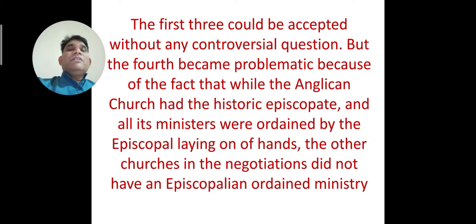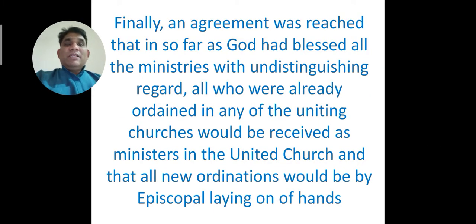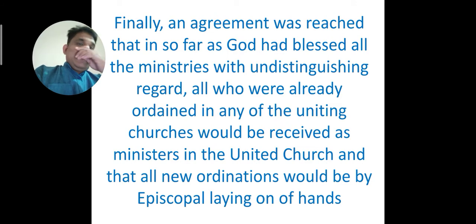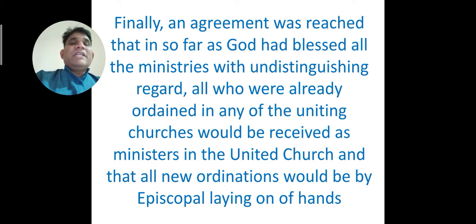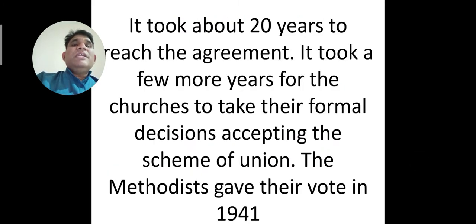The fourth principle became problematic because, while the Anglican Church had a historic episcopate and all its ministers were ordained by the episcopal laying on of hands, the other churches in the negotiations did not have an episcopally ordained ministry. Finally, an agreement was reached that, in so far as God had blessed all the ministers without distinction, all who were already ordained in any of the uniting churches would be received as ministers in the United Church, and that all new ordinations would be by episcopal laying on of hands.